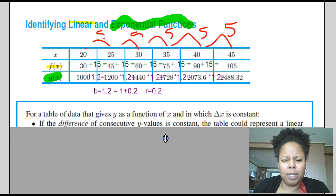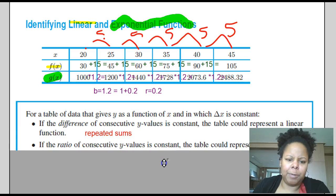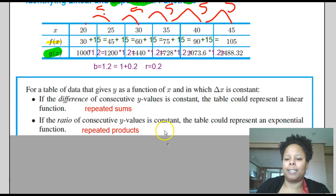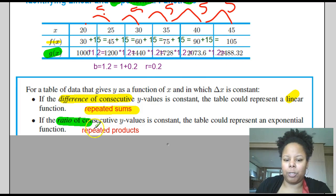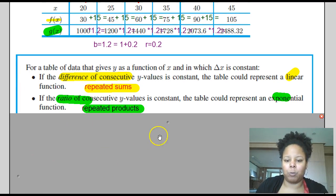So in this case, it's easy to say that the second function would have to be an exponential function because it has a constant increase in terms of multiplication. So for a table of value that gives you y as a function of x in which the delta of x is constant, if the difference is constant, then the table represents a linear function. In other words, if you have a difference which is constant, that means you have repeated sums. So here's repeated sums of adding 15. Whereas here, in the case where we have the ratio of consecutive y values is constant, when we divide them by the previous one, we got 1.2. That's an exponential function, and that's because the products are repeated. We multiply it times 1.2 times 1.2 times 1.2.